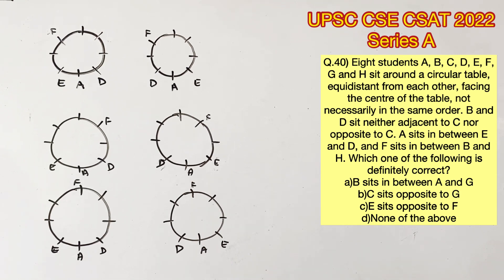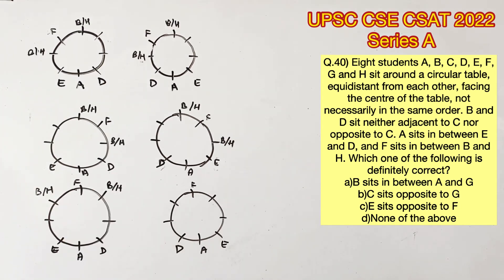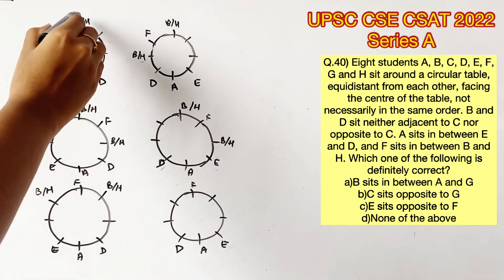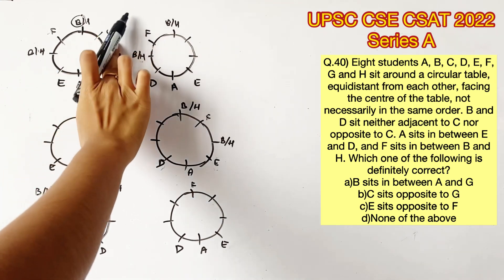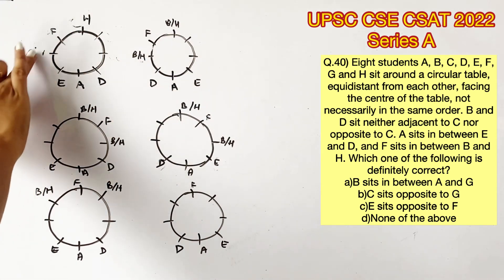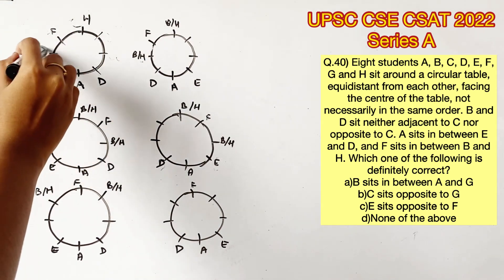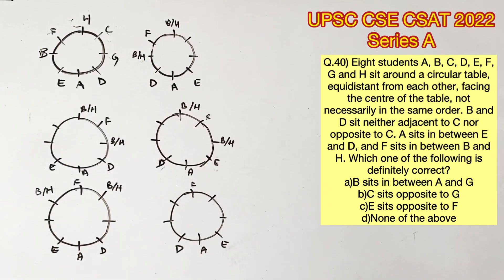F sits in between B and H, so let's mark B and H on either side of F. Backtracking to the first statement — B and D sit neither adjacent to C nor opposite to C — let's fill positions in the first circle. If B is sitting here, C cannot occupy the adjacent or opposite positions, leaving no place for C. So B here is not possible. This has to be H and this has to be B. We now know this place is occupied by C and this by G. So this is one valid possibility.